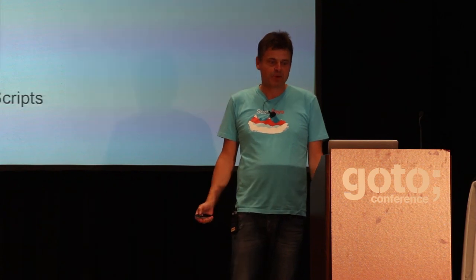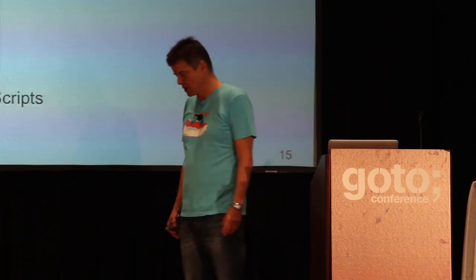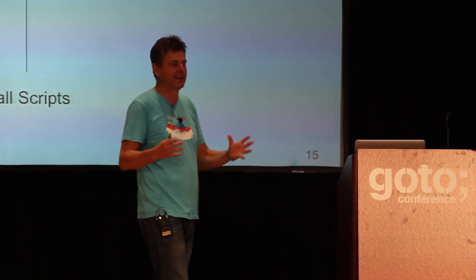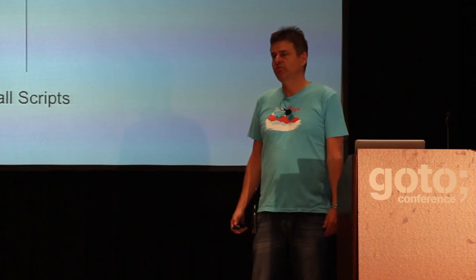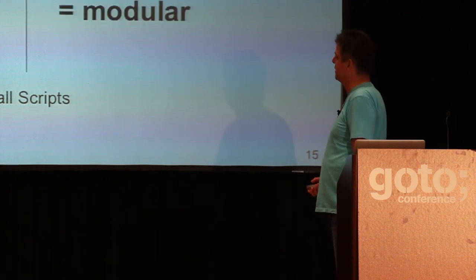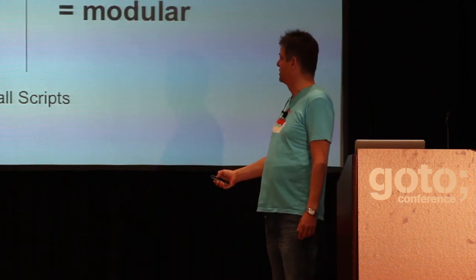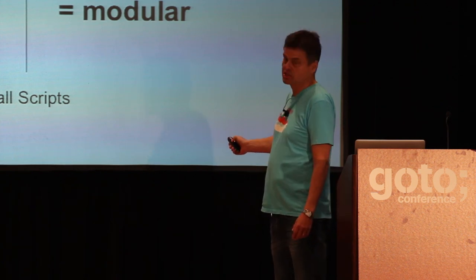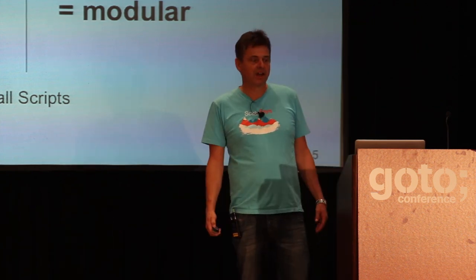As James Iry wrote in his 'Brief, Incomplete, and Mostly Wrong History of Programming Languages': a drunken Martin Odersky sees a Reese's peanut butter cup and has an idea. He creates Scala, a language that unifies constructs from both object-oriented and functional languages. This pisses off both groups and each promptly declares jihad. It's amazingly prescient — when it came out I thought it was slightly funny, but now I'm actually not sure it's that funny anymore.